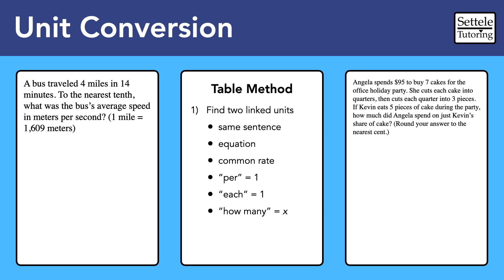The best way to handle unit conversion questions is with the table method. Start by making two columns by drawing a line down the middle of your workspace. Now go find a pair of linked units in the question. They will almost certainly be in the same sentence, and there will probably be at least one number attached. It doesn't matter which pair of units you choose, but you have to write down both the numbers and the units. Write one of the numbers and its unit on the left side, write the other number and unit on the right side.